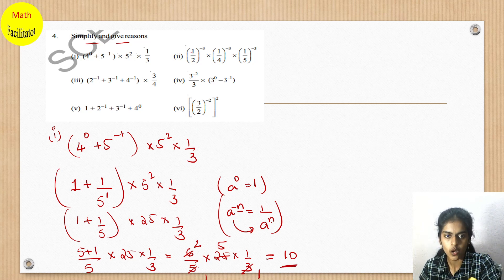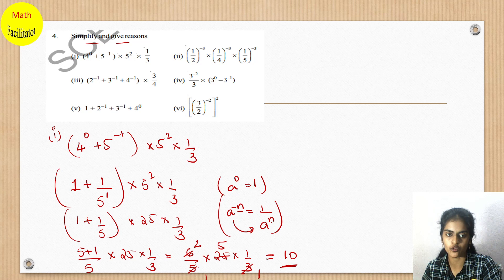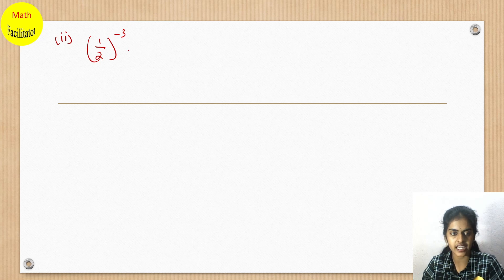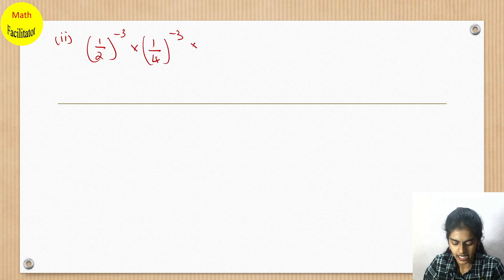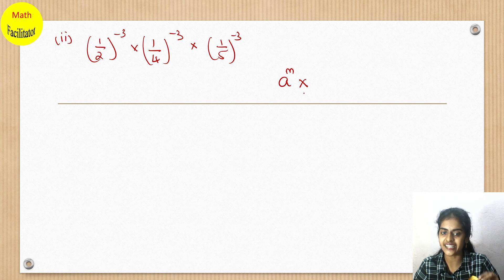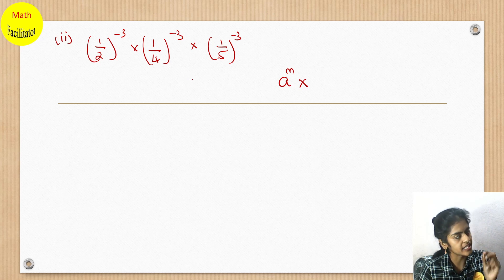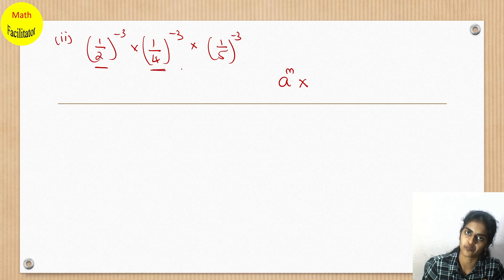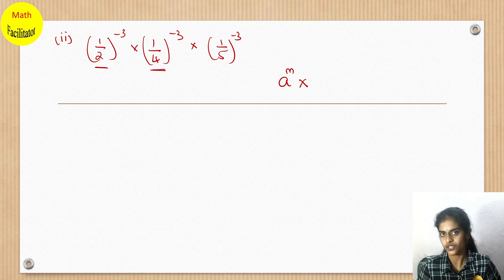The next question: 1 by 2 whole to the power minus 3, into 1 by 4 whole to the power minus 3, into 1 by 5 whole to the power minus 3. So this is of the form A to the power M into B to the power M. Many students get confused here, so the tip is: the base is 1 by 2 and 1 by 4 — are the bases equal? No, the bases are not equal.